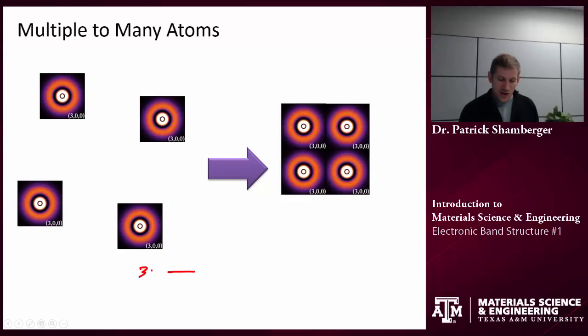Again, we start off with 3s orbitals. And we have four of them because we're combining four different atoms. When I bring those atoms together, when they start to interact, again, I'm going to have energy level splitting. And so now I can have four potential orbitals that electrons can fill.